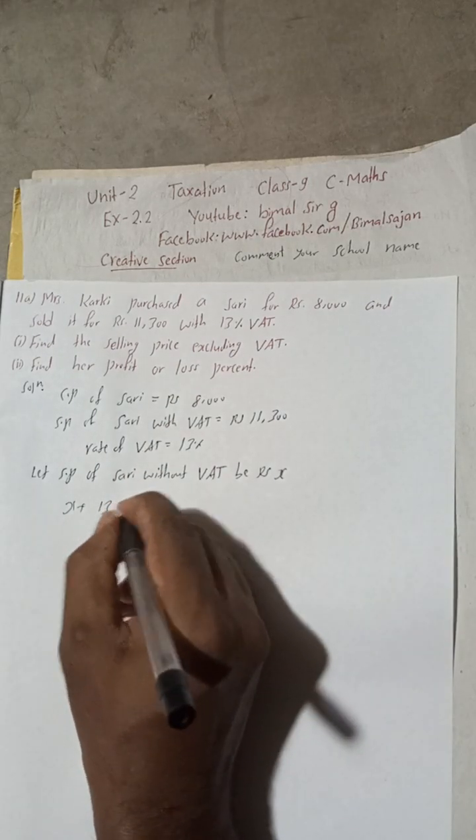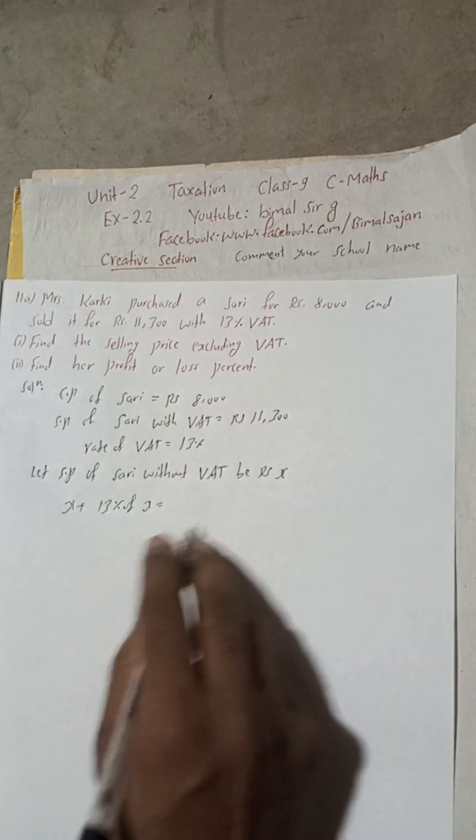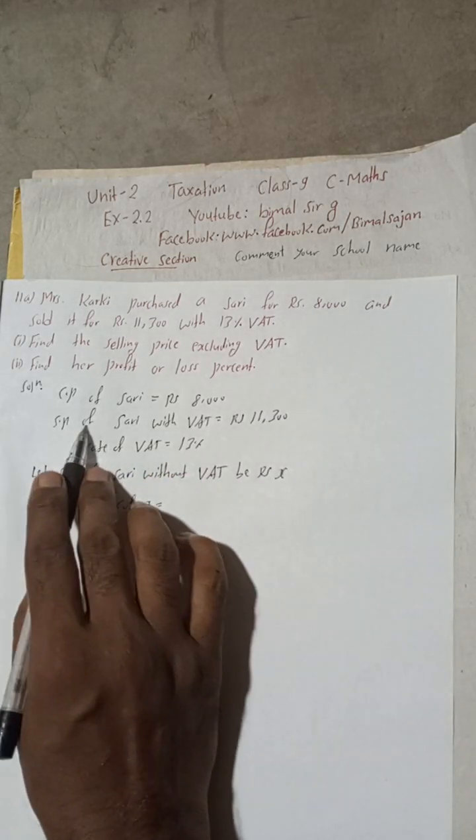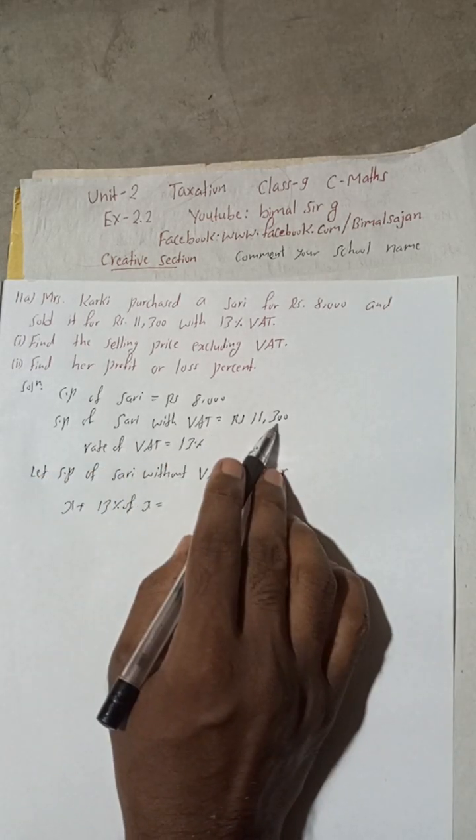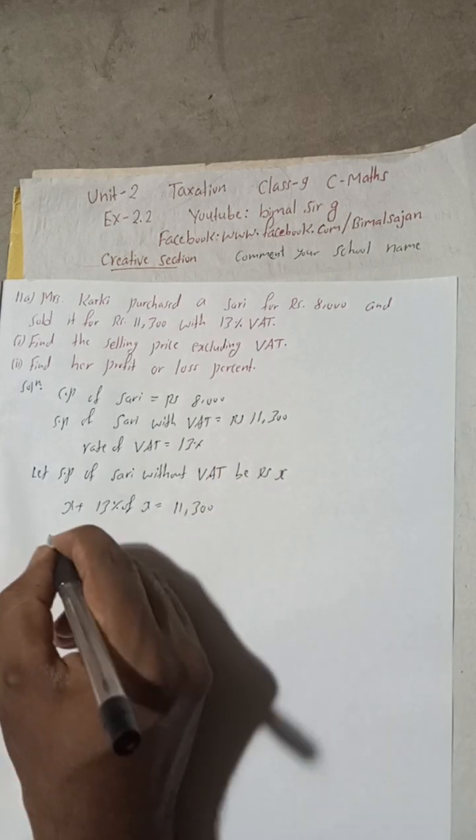Then this x without VAT, this x plus 13 percent VAT, 13 percent of this x will be how much? Will be equal to this amount, SP of sari with VAT. This will be 11,300.